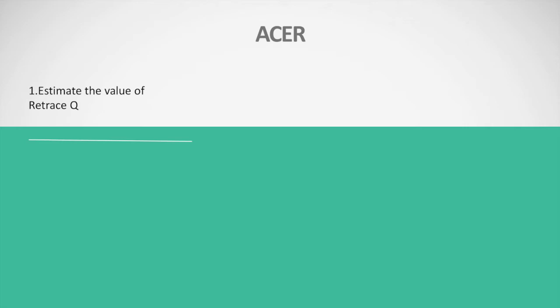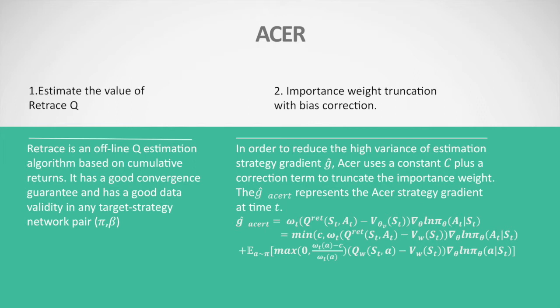The first improvement is estimating the value using Retrace Q-estimation, which is an off-policy Q-estimation algorithm based on cumulative returns. The second improvement is importance weight truncation with bias correction. To reduce the high variance of the estimation strategy gradient, ACER uses a constant plus a correction term to truncate the importance weight, as shown in the formula.